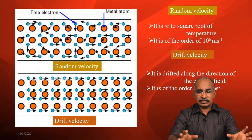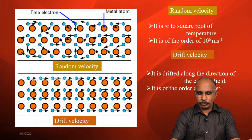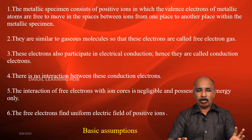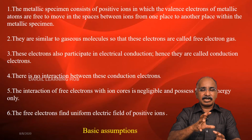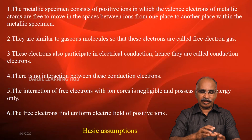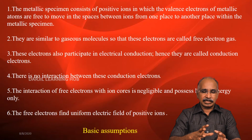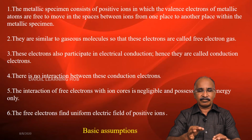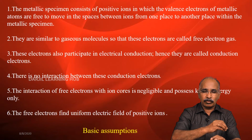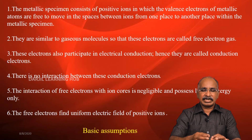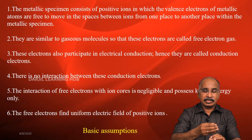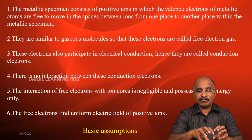In this context, Drude proposed the free electron theory. All metals consist of positive ions — the nucleus and inner electrons together form positive ion cores. The free electrons, that is the electrons in the outermost orbit, are the valence electrons and they are free to move about in the space between the ions. On the lattice points, the positive ions are fixed while the free electrons move freely.